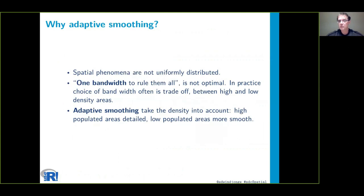Why adaptive smoothing? Well, spatial phenomena are not uniformly distributed. It's easy to think that one bandwidth will take care of everything, but it's not optimal. In practice, your choice of bandwidth is a trade-off between more detailed areas and less detailed populated areas. Adaptive smoothing has the promise to take this density into account, so high populated areas will be detailed and low populated areas are more smooth.